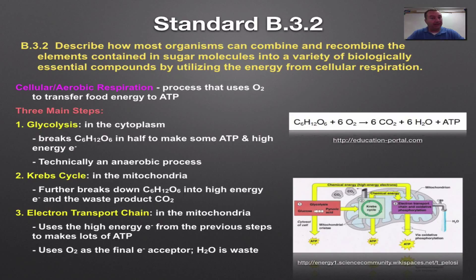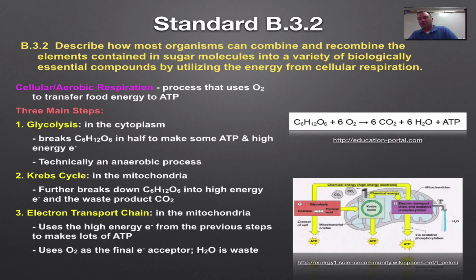Step one is glycolysis. Glycolysis occurs in the cytoplasm — you take glucose and break it in half. That creates a little bit of ATP and some high-energy electrons, and these hydrogen electrons move into the mitochondria to be used later. Glycolysis is technically an anaerobic process because it doesn't require oxygen.